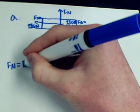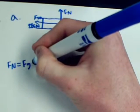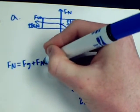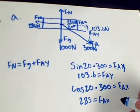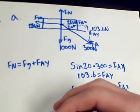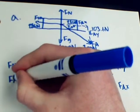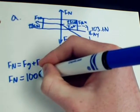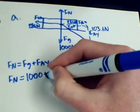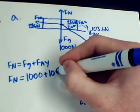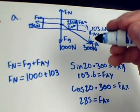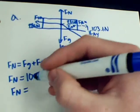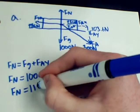Now we have to find the normal force, which is the force of gravity plus the force applied in the y direction. So in this case, the normal force equals 1000 newtons plus 103 newtons. That gives us 1103 newtons.